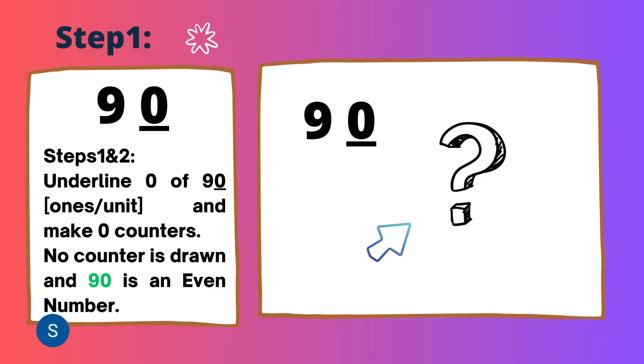Now, I have a number 90 which has 0 in place of the unit or ones. It means I do not have to draw any counter, so no partner is required. In this case, all the numbers which have 0 in place of unit or ones have to be considered as even numbers.